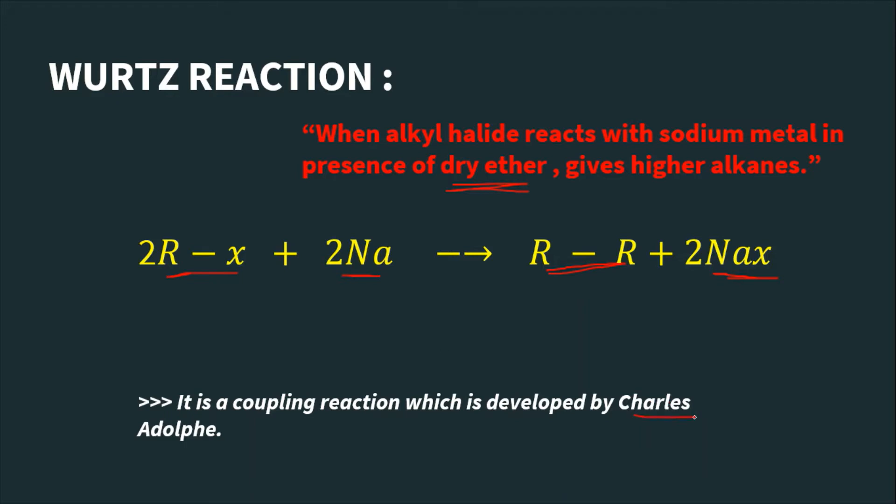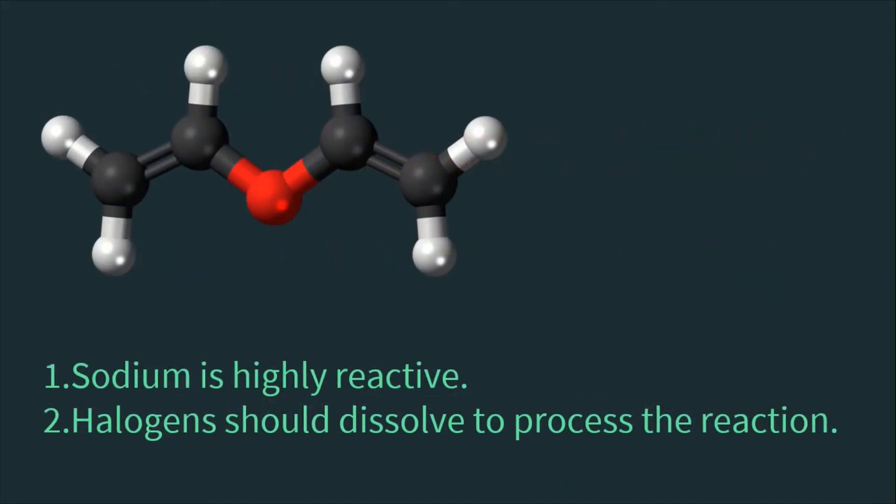So we use dry ether here. Why do we use dry ether? Because sodium is highly reactive, a solvent must be selected in such a way that it will not react with sodium. So that solvent is dry ether, and even halogen should dissolve into the solvent to continue that reaction.